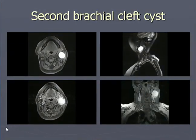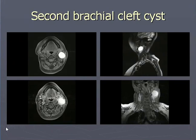This is the case of a second branchial cleft cyst. You can see the T1 and T2 weighted images — these are mostly T2 weighted images where you can see a bright or hyperintense, well-defined, rounded lesion in the left side of the neck.